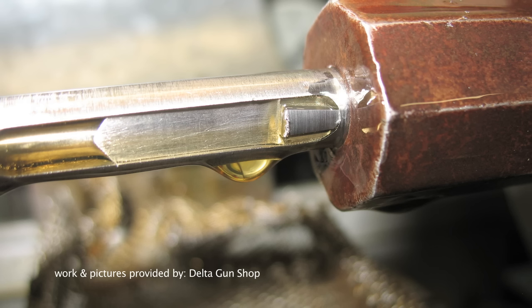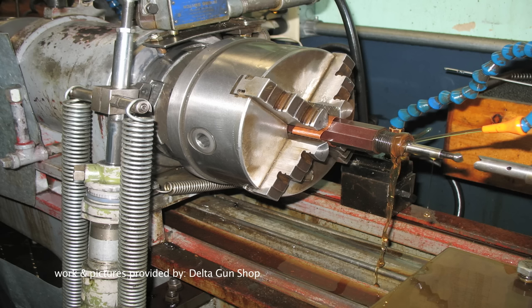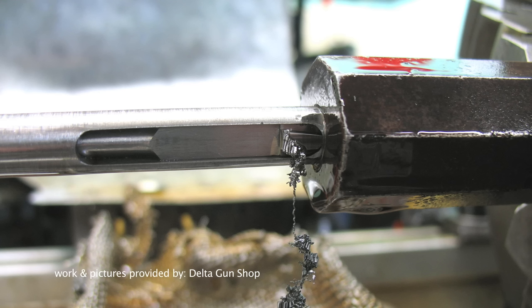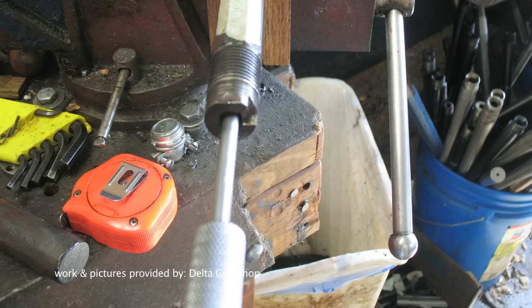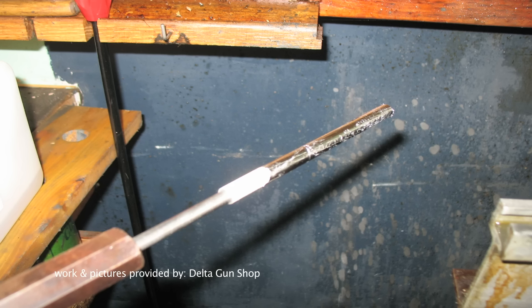Then new rifling grooves are cut one at a time with multiple passes to deepen each groove to a depth of about 5,000. It's slow painstaking work. Finally the rifle bore is hand lapped to remove all of the marks left by the rifling cutter.